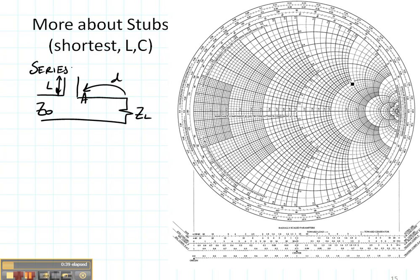So let's just suppose that my ZL happens to be right here as it was before. The first thing that I'm going to do is rotate a distance D to the matching circle and I'm going to be going towards the generator.